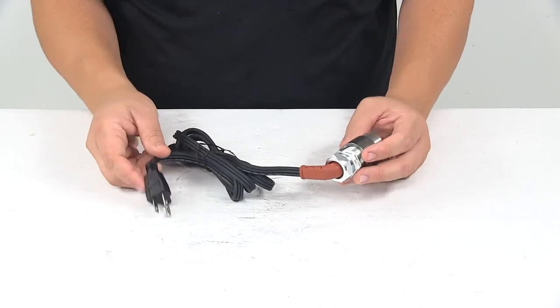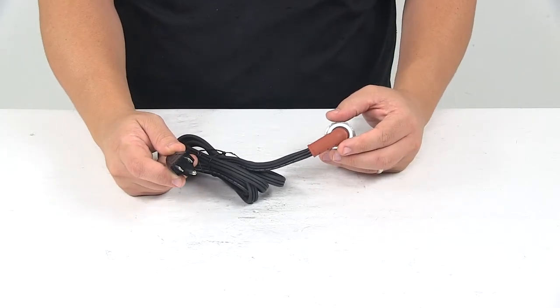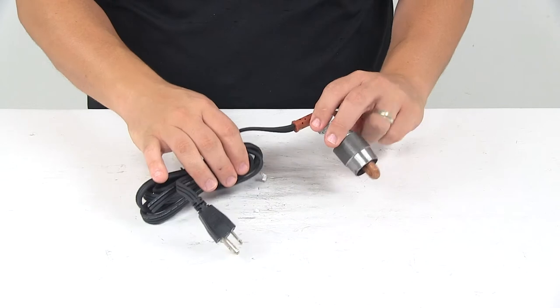You can route this through your grill and plug it into a standard 120 volt AC outlet. Cord measures around 6 feet long.